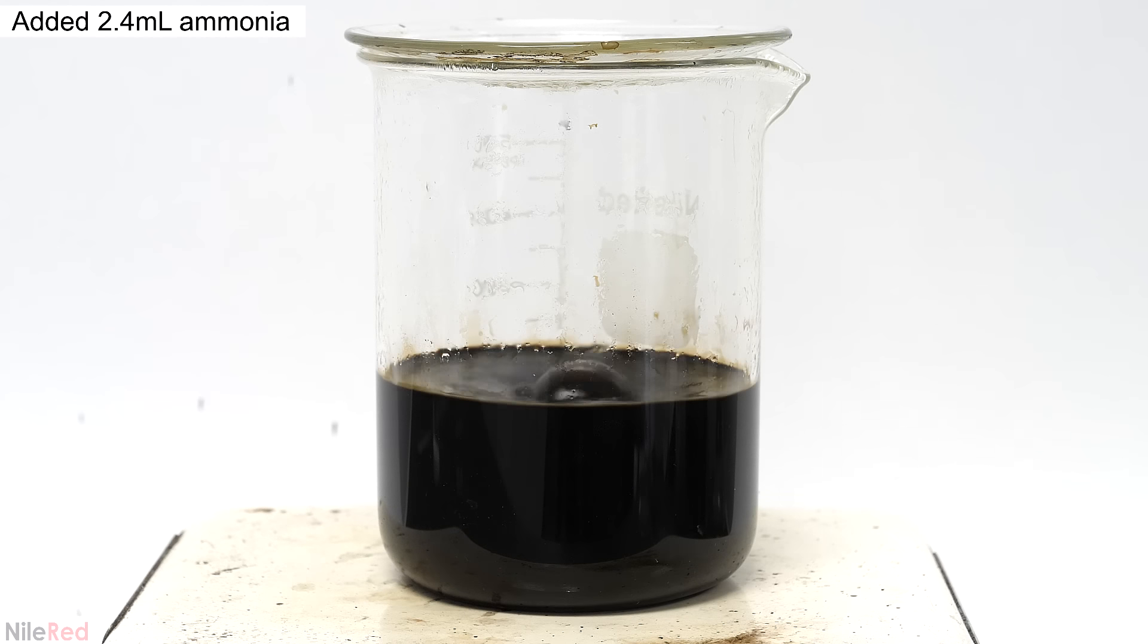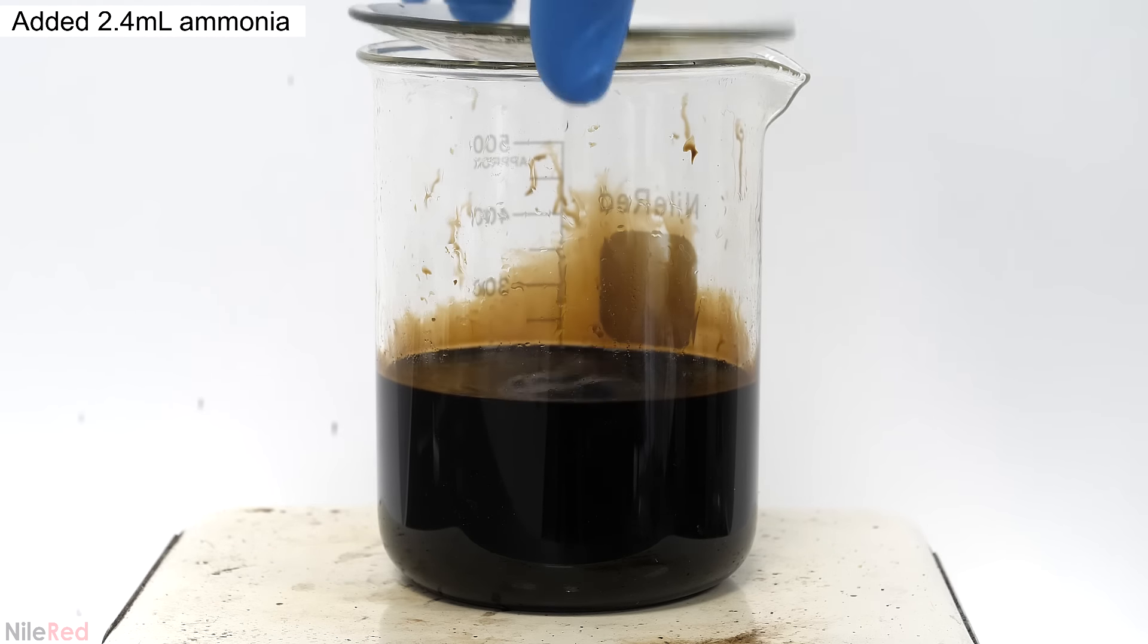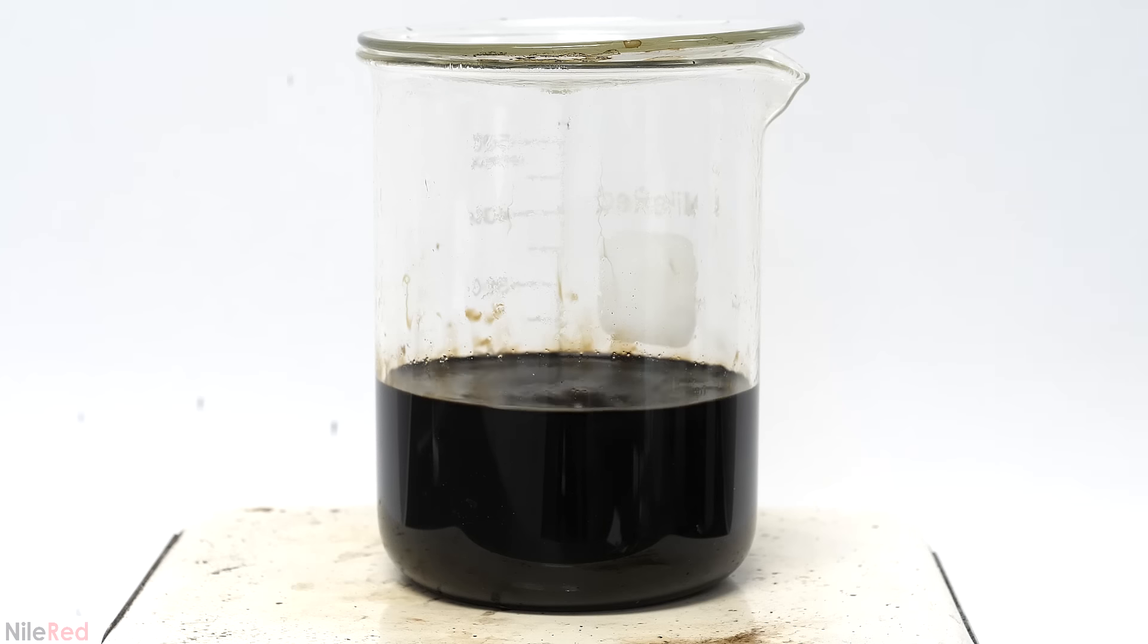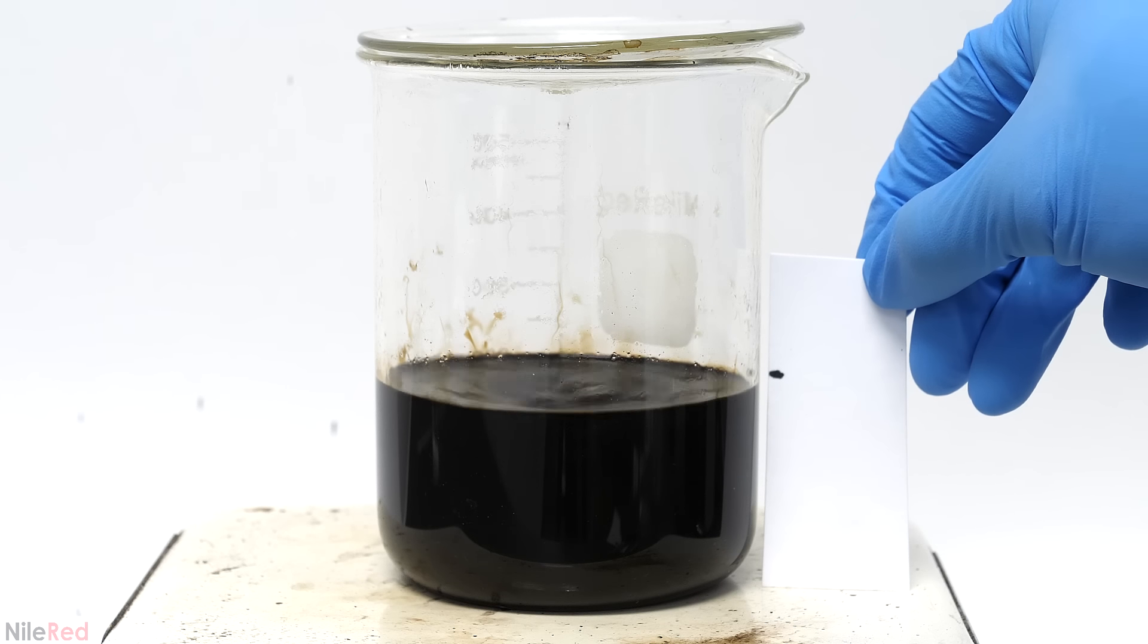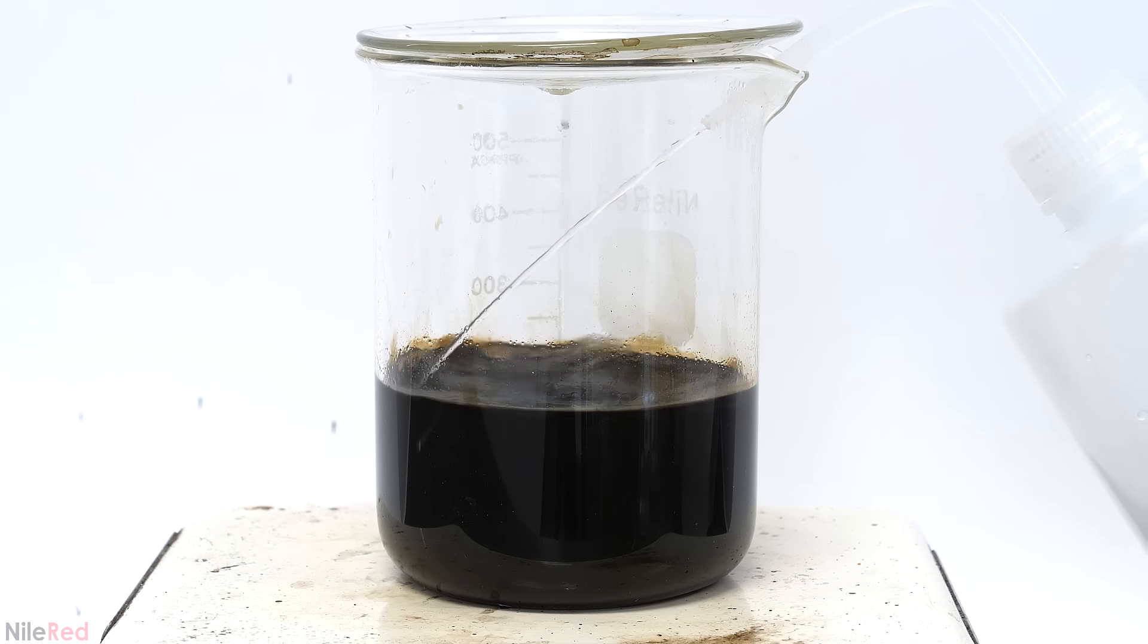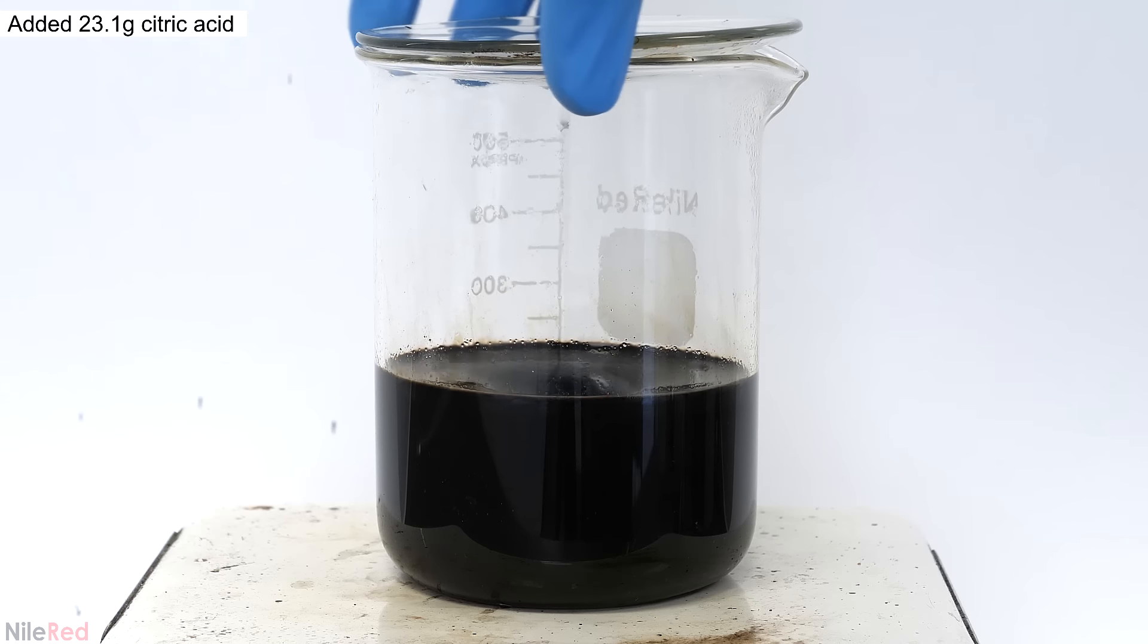I brought it back to a hard boil and I added 2.4 mils of the concentrated ammonia solution. Then I let this boil for another 90 minutes. It was important to keep the volume constant here, and I used a piece of paper to mark the height. I just checked it every five or ten minutes or so and added more water when needed.